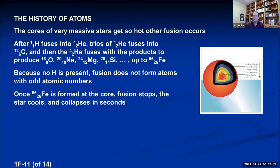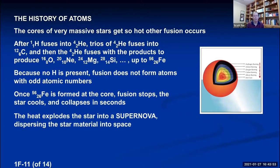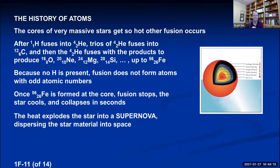Once iron-56 forms at the core of the star, fusion stops because no heavier elements can be produced. When fusion stops, the star cools; the gas condenses and the star collapses in seconds, creating so much heat that it explodes — a supernova. All those even-atomic-numbered atoms — oxygen, neon, magnesium, silicon, iron — get blasted out into the universe.